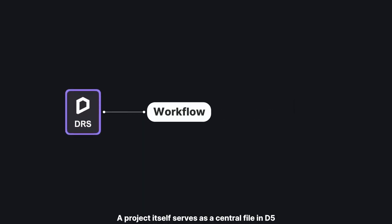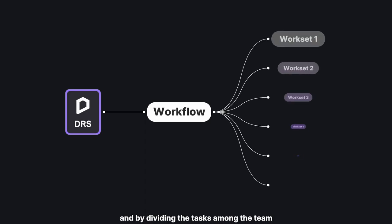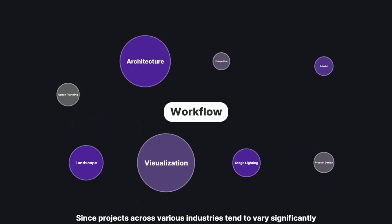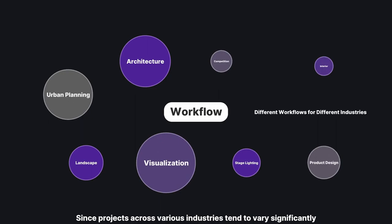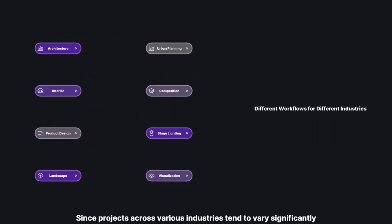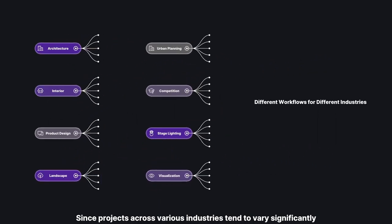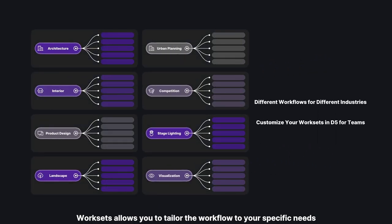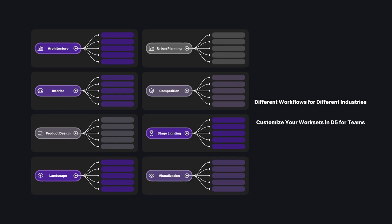A project itself serves as a central file in D5, and by dividing the tasks among the team, different worksets are created and assigned to each person in charge. Since projects across various industries tend to vary significantly, worksets allow you to tailor the workflow to your specific needs.